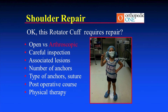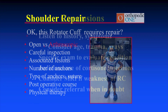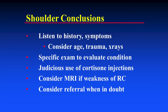In summary: listen to the history and symptoms, consider the patient's age and trauma history, get appropriate X-rays and a specific exam to evaluate the condition, use cortisone injections judiciously. If they have weakness of the rotator cuff, get an MRI before starting cortisone injections — because cortisone will mask their pain and you may miss progression. Consider referral when in doubt. Thank you.